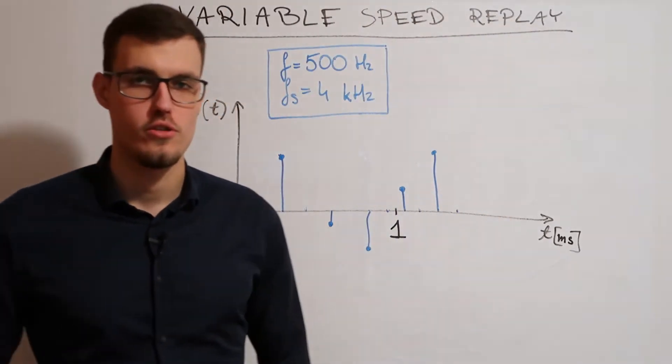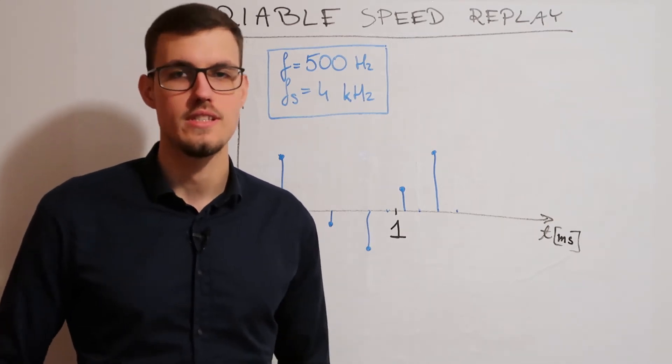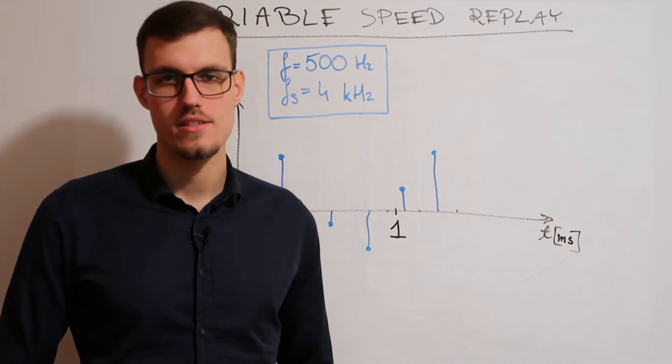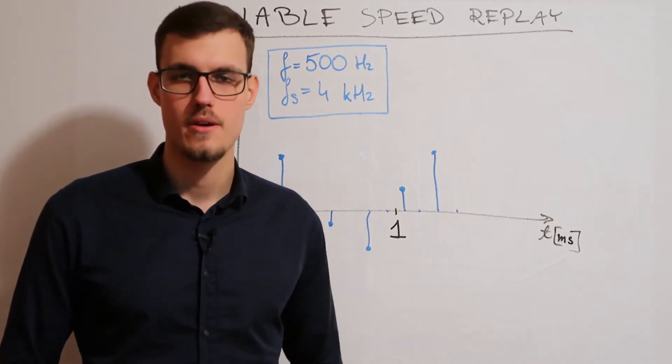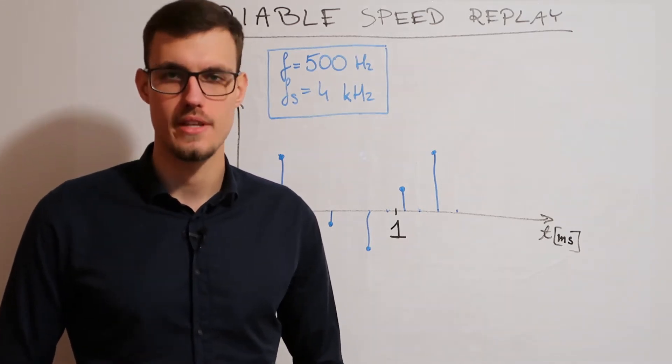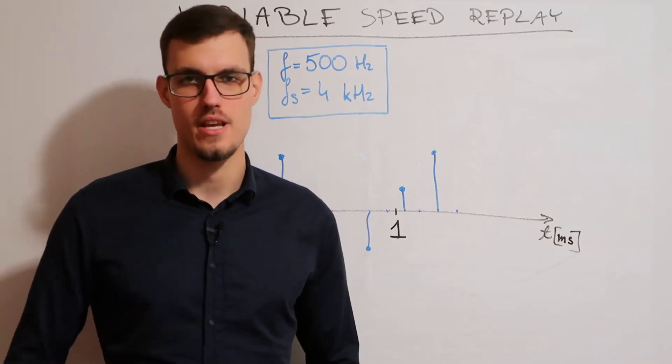But since we shortened our signal, we also shortened its period, which means in this case that we raised its frequency 2 times. Such process of removing samples is called decimation.